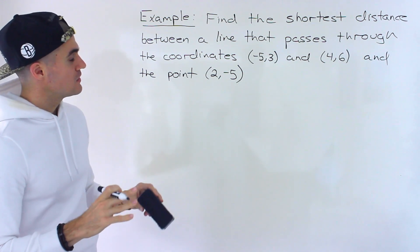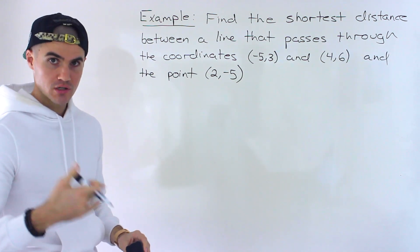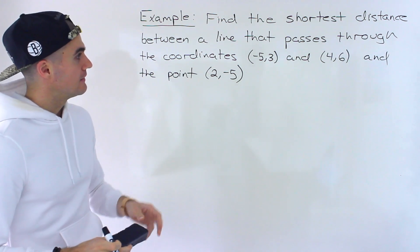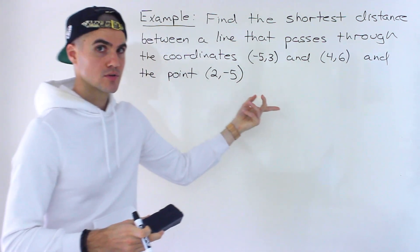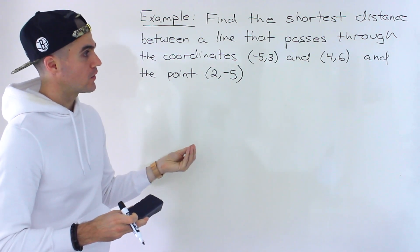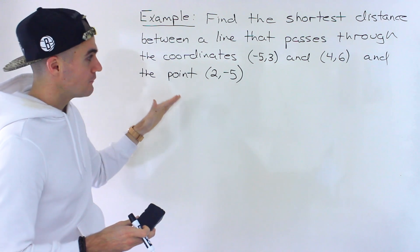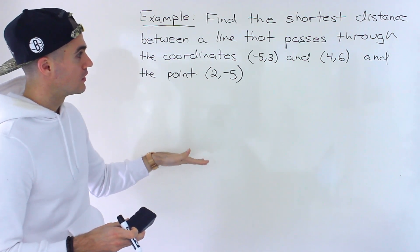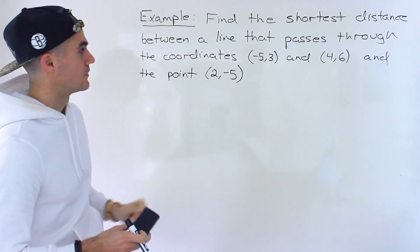This is a unique format because in the previous examples we were given the equation of the line we were working with. But in this case we're given the coordinates that the line is going through. So we're going to have to do a preliminary step where we find the equation of the line first, and then once we have that, we follow those exact same steps we've done before with finding the shortest distance from a line to a point.